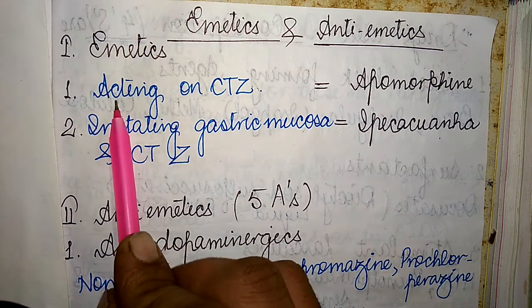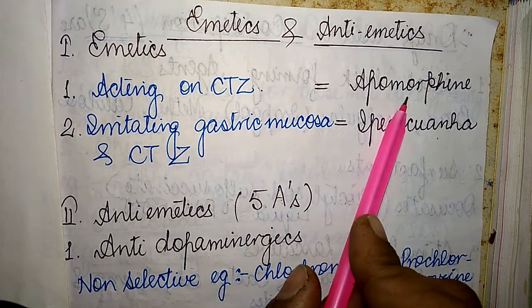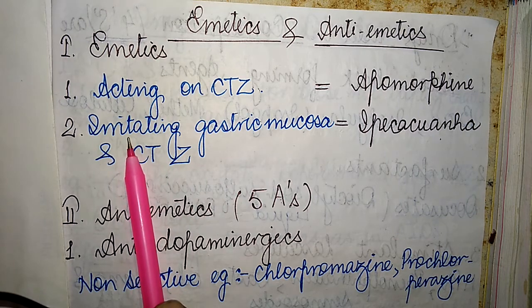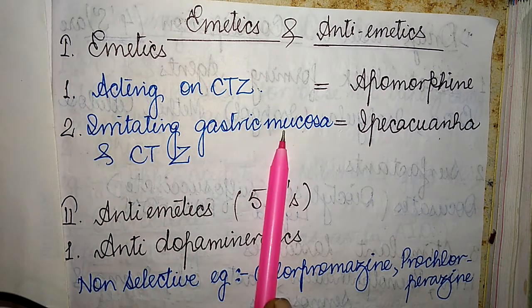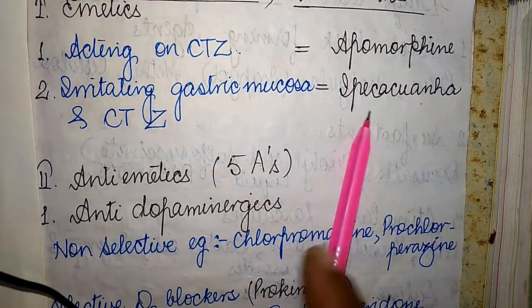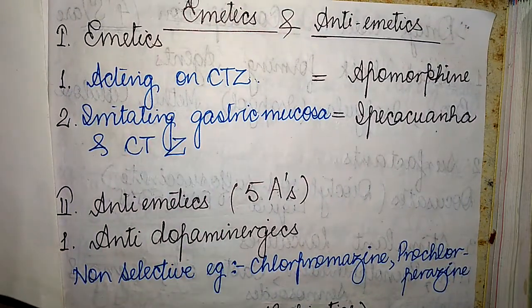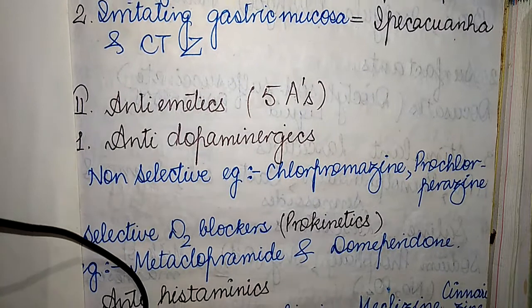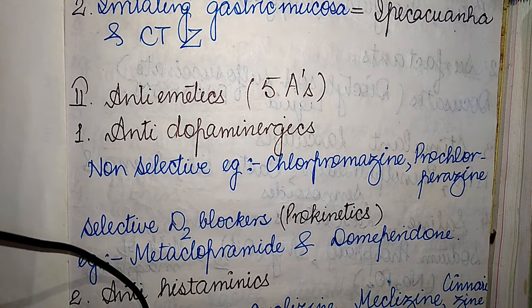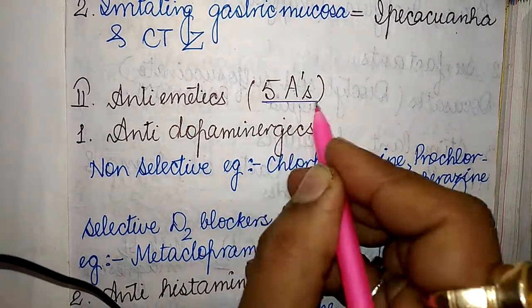The first class of drugs acting on the chemoreceptor trigger zone is apomorphine. The second class, which irritates the gastric mucosa and CTZ, is ipecacuanha. Now moving to anti-emetic drugs, their classification can be easily remembered using the five A's mnemonic.